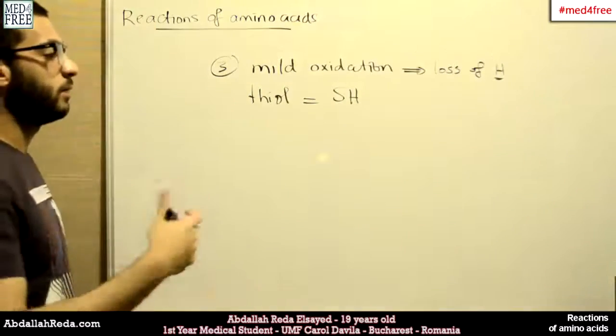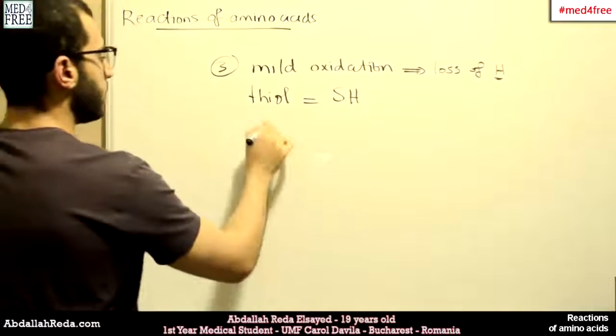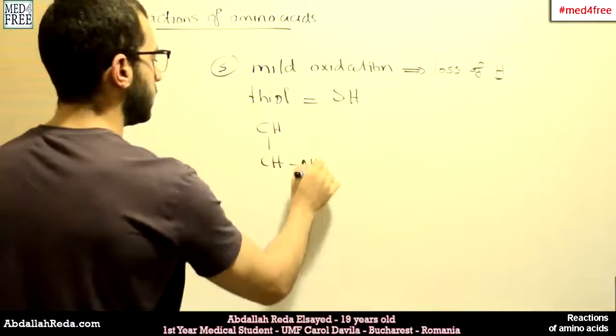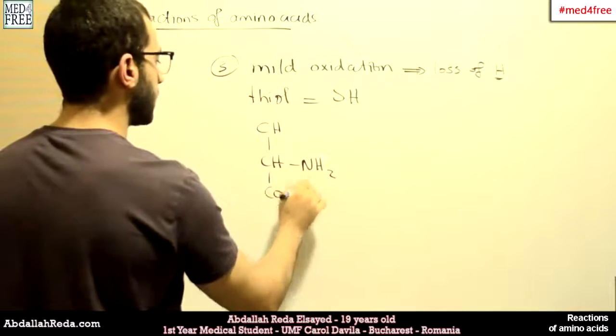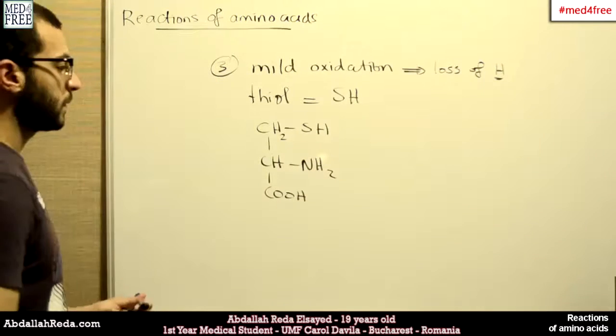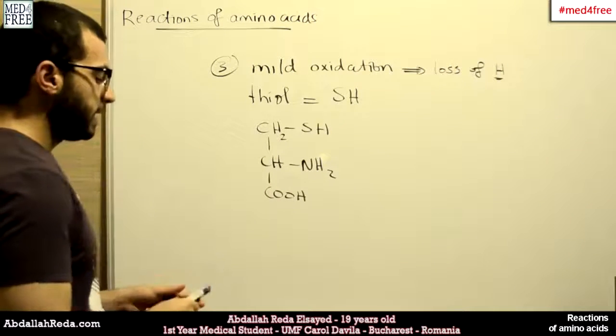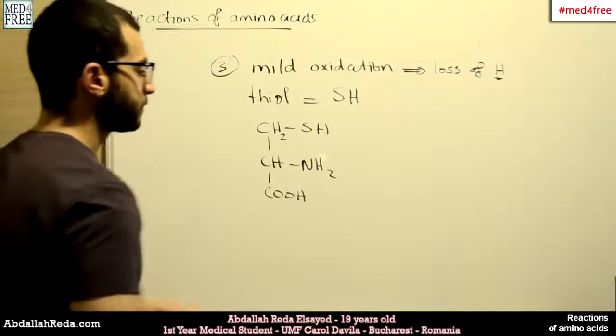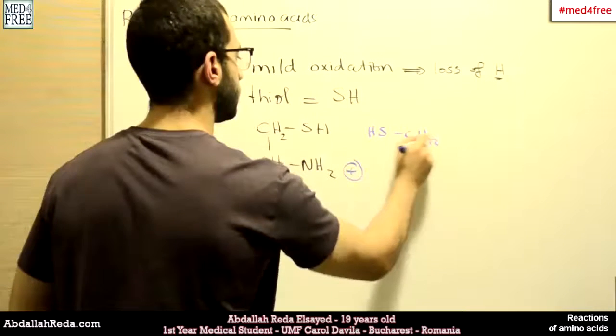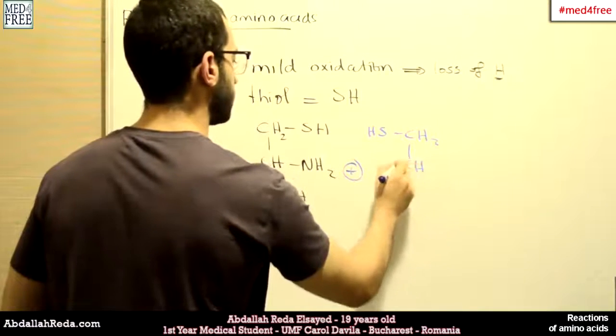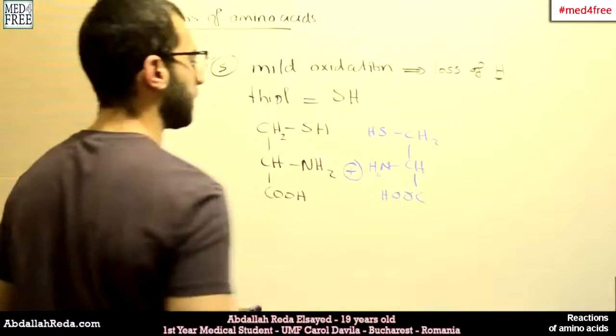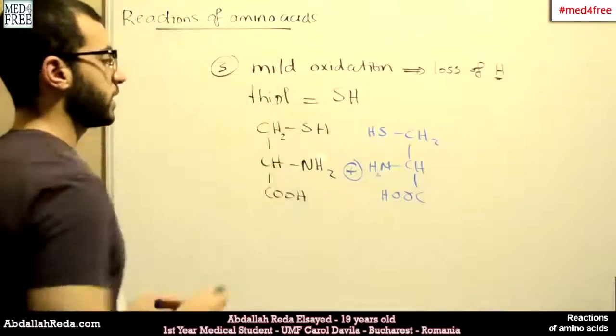This applies on cysteine and methionine. For example, we have cysteine. Cysteine is like this. And if we add another molecule of cysteine like this, and we apply this reaction, oxidation.